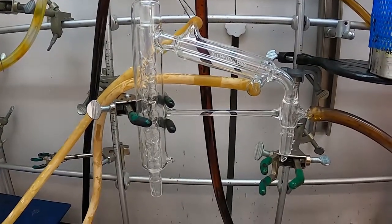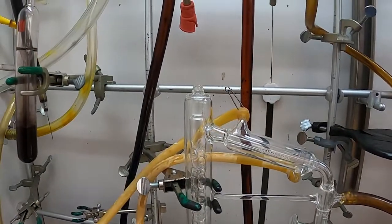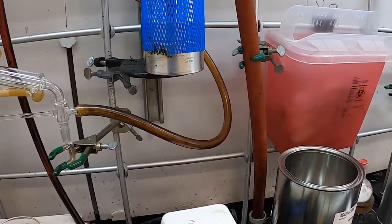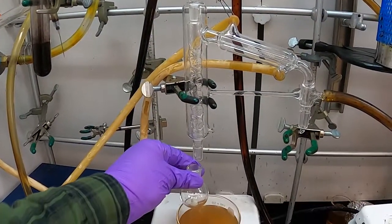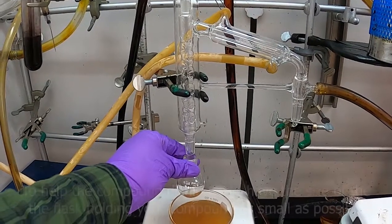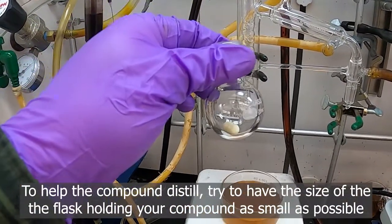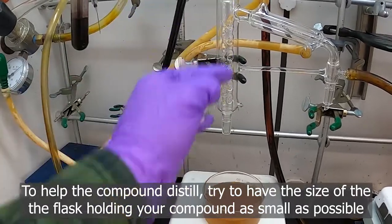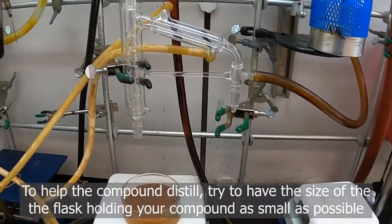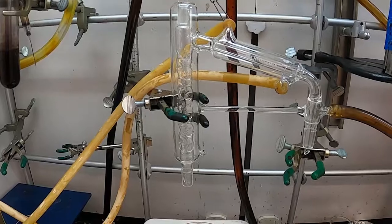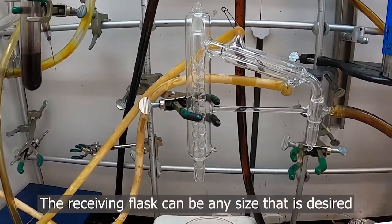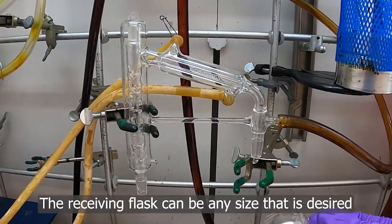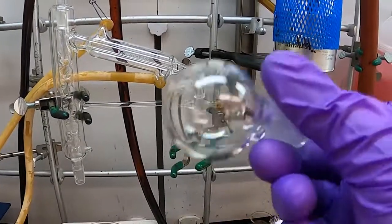One of the key things with distilling is that the flask that you attach to distill from, you want to be as small as possible so that you have very little extra space in the top of your flask, because you want the vapor of your compound to move over. If your distilling flask is too big, it will make that process slower. What you receive into can be whatever size you need.